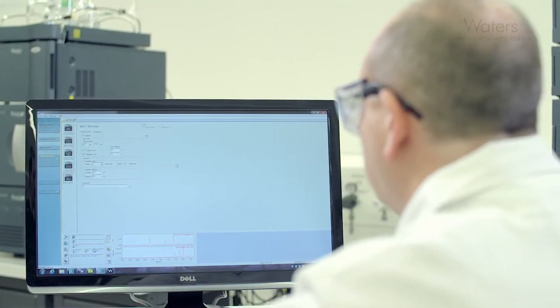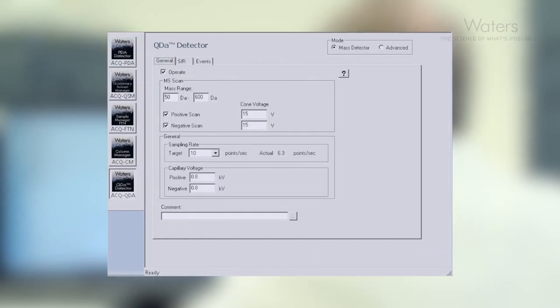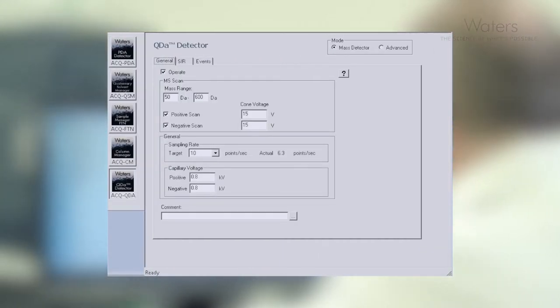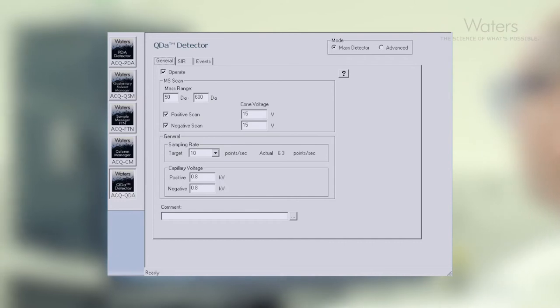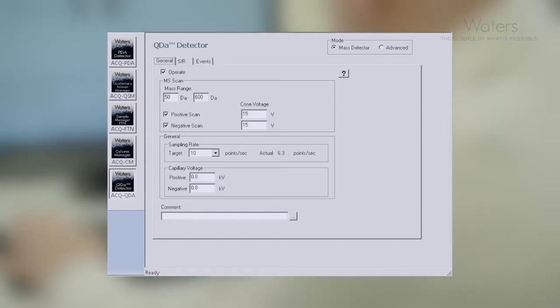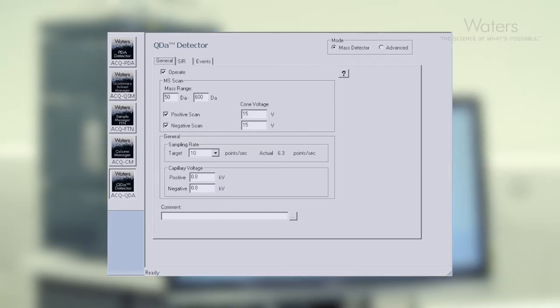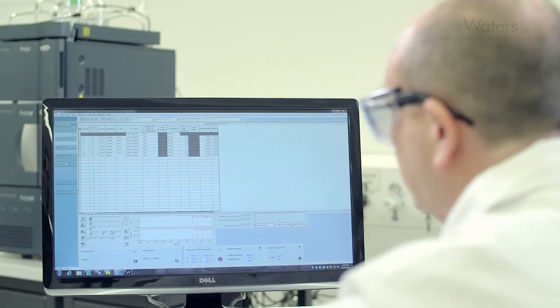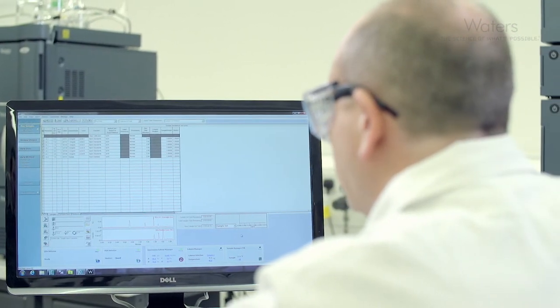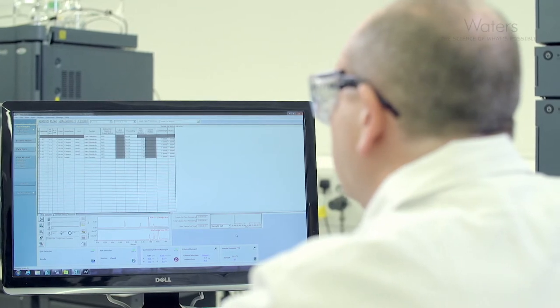For those of you that are familiar with Empower, you will notice that the setup parameters to acquire data are extremely similar to those which you would use if you're acquiring data from a photodiode array. The main difference is that you are using a mass range rather than a UV range. Once we have entered these parameters, we are ready to make our first injection. It really is as straightforward as that.